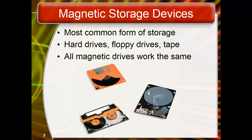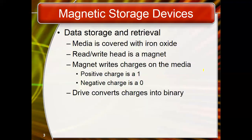During writing, a data signal is sent through a coil of wires to create a magnetic field in the core. At the gap, the magnetic force forms a fringe pattern that magnetizes the oxide on the media. When data is read, the read head pulls a varying magnetic field across the gap, creating a signal in the coil that is sent to the computer as binary data.